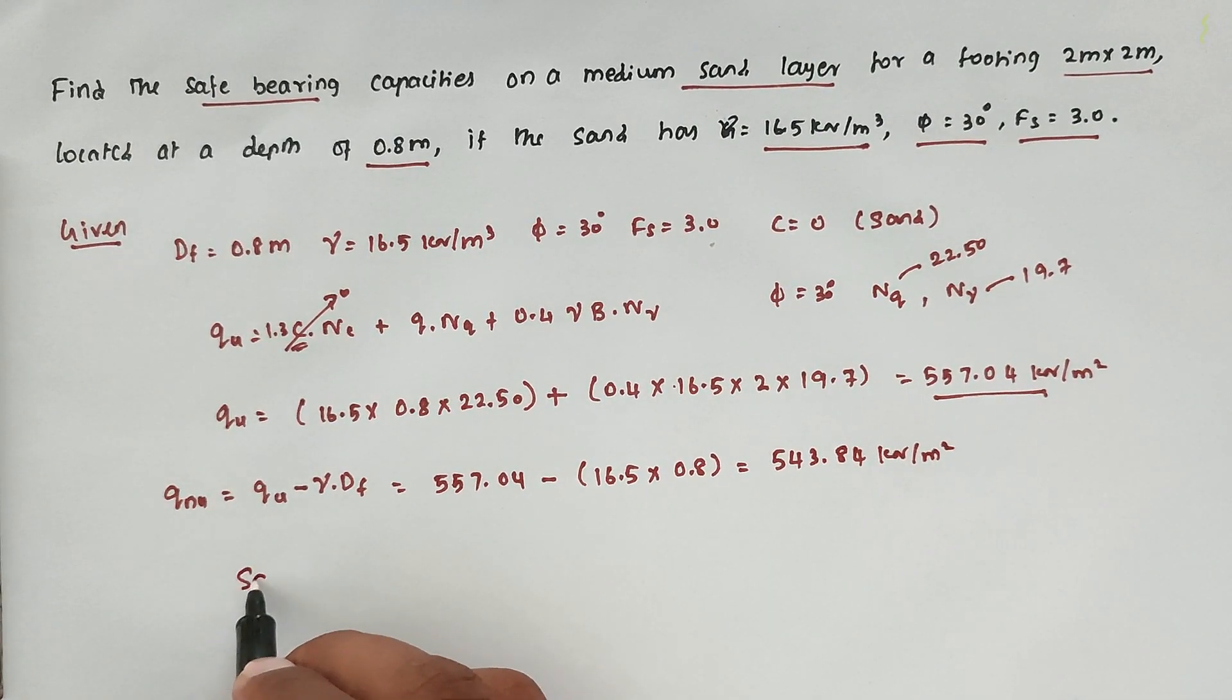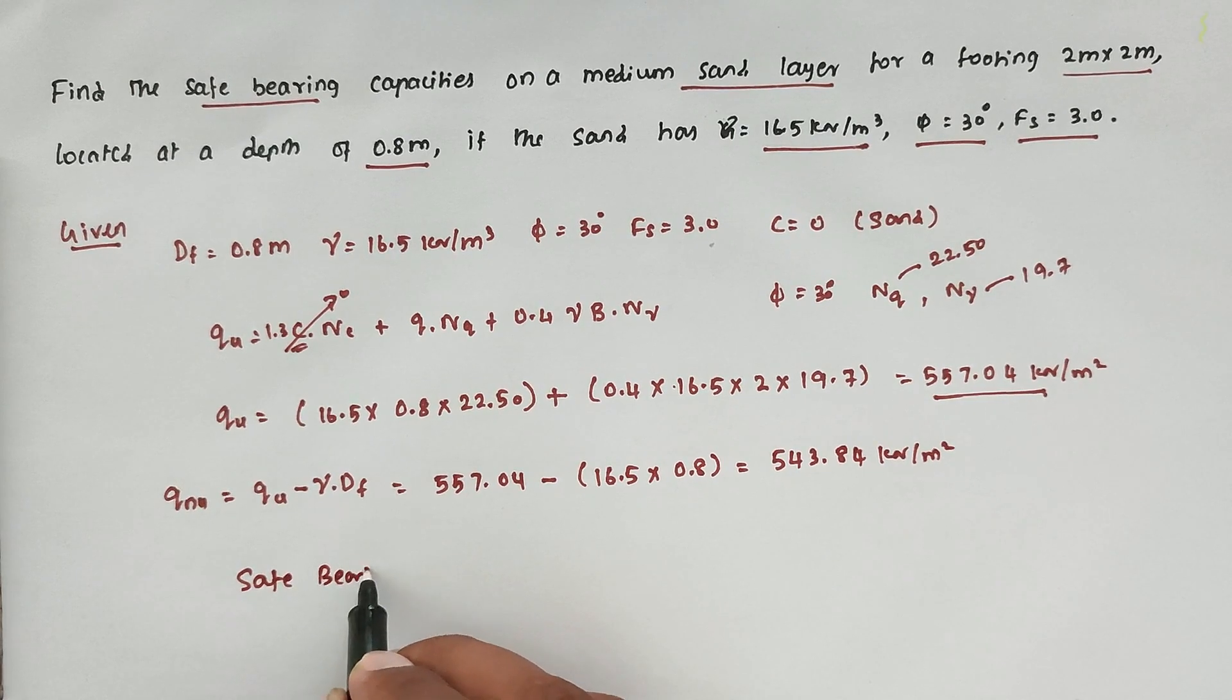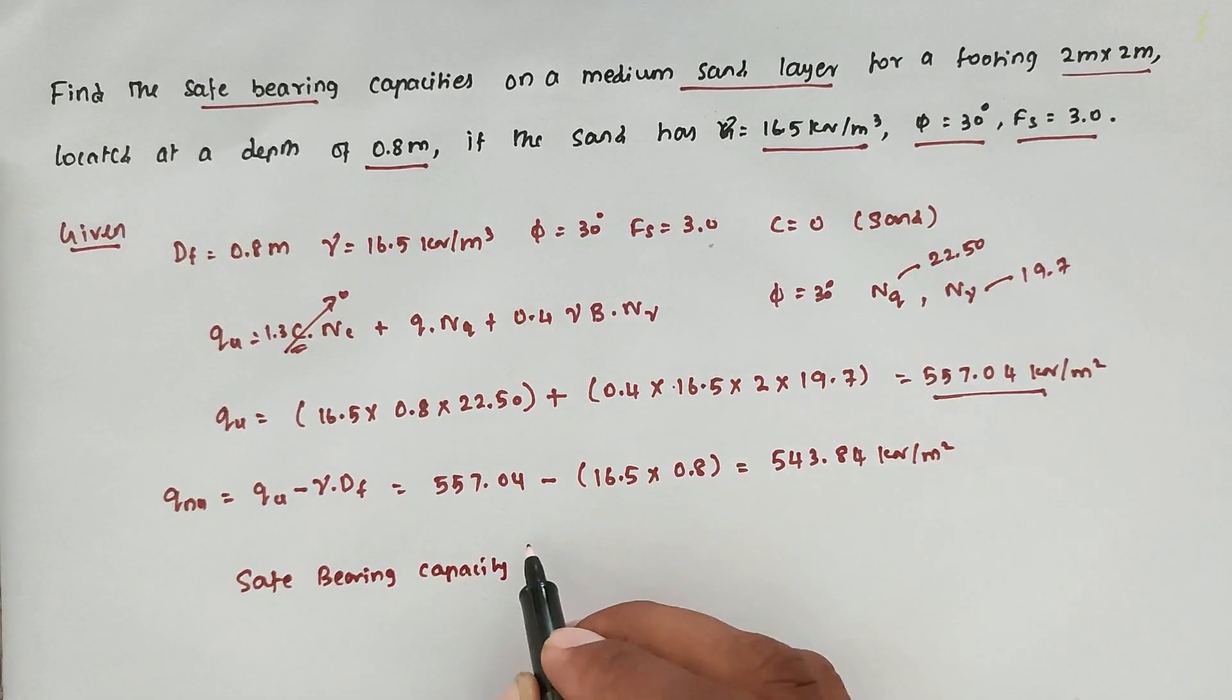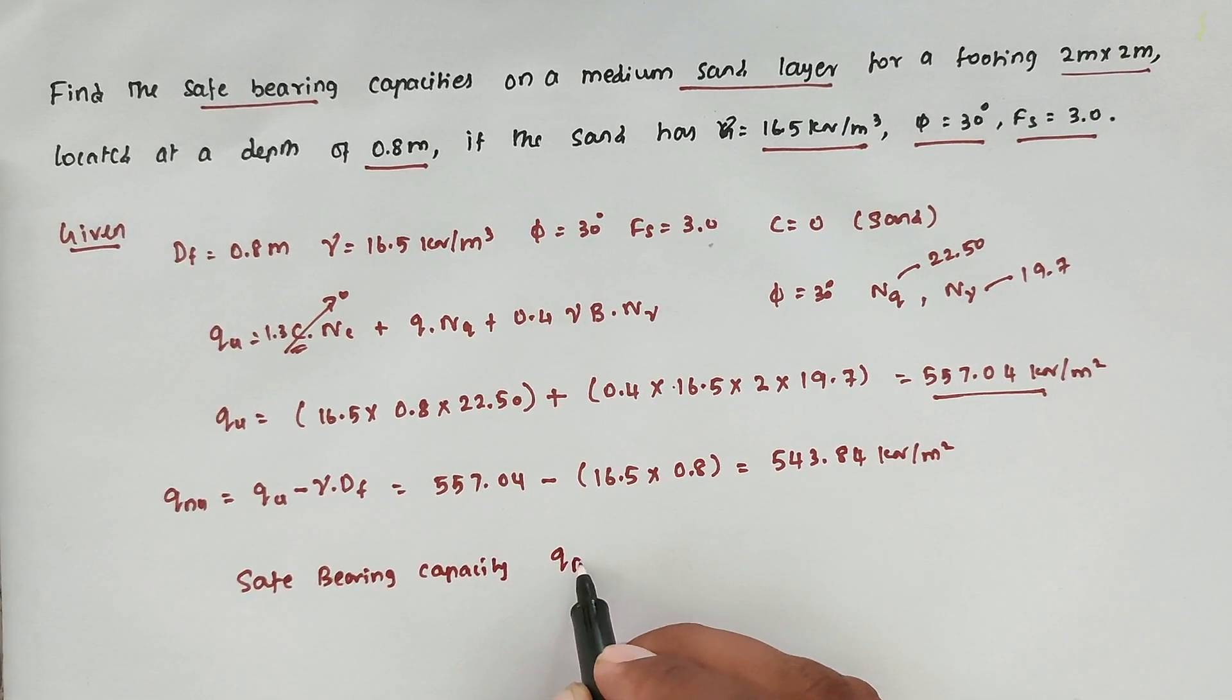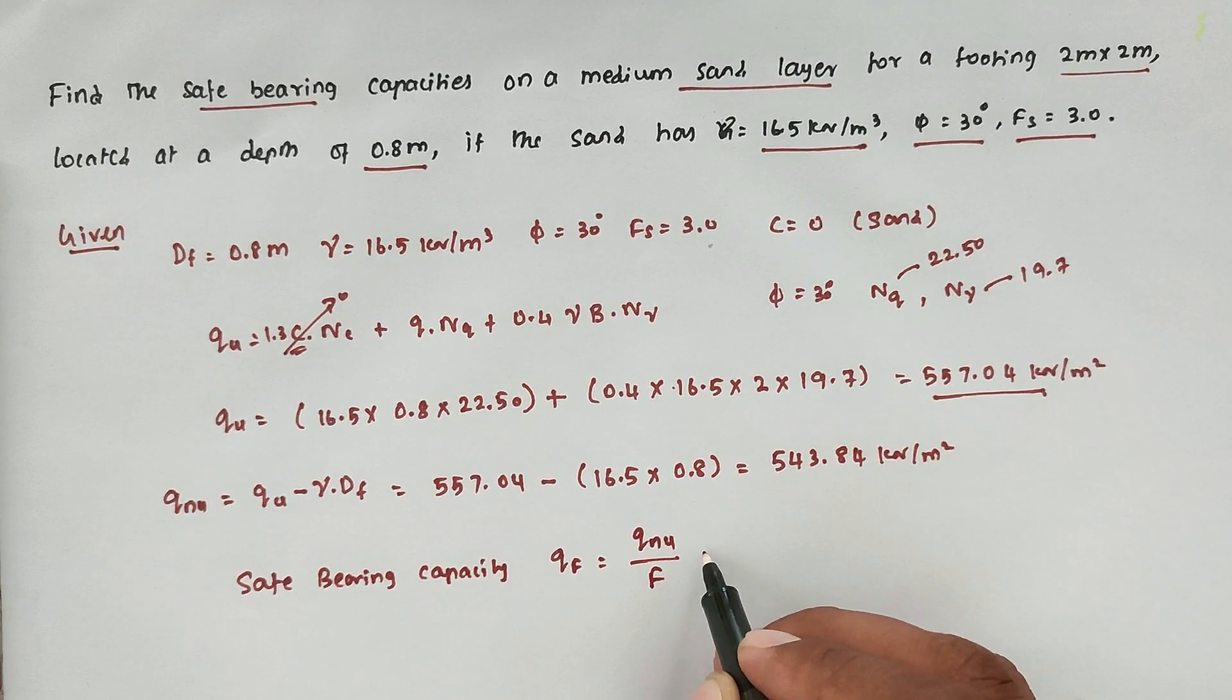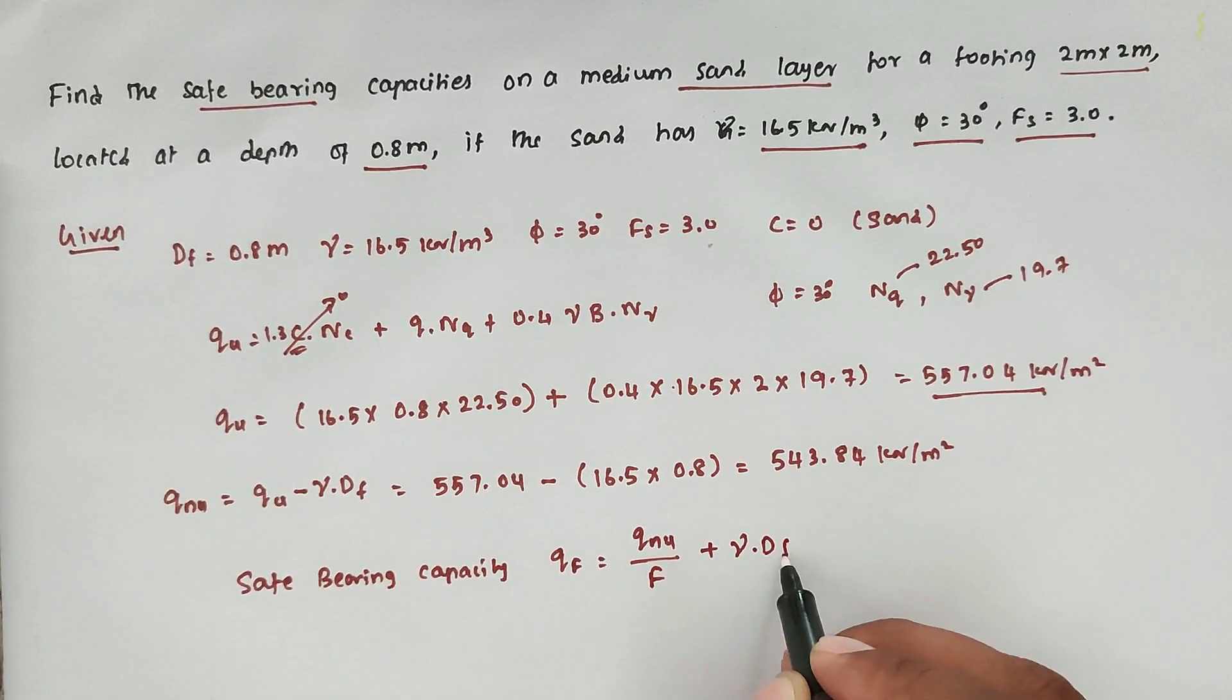So next thing is safe bearing capacity: qf = qnu/F + γ·Df. This is the formula.